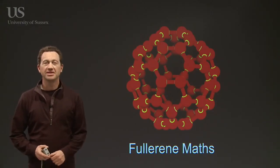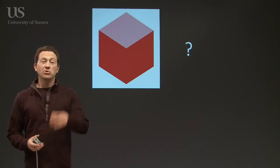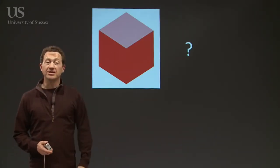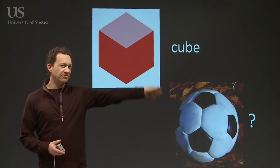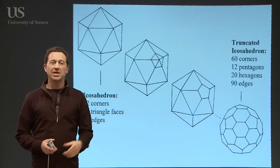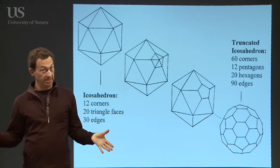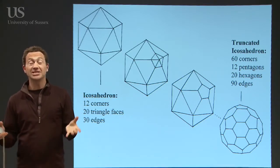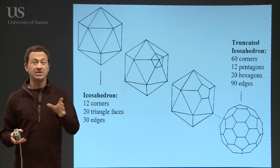Let's talk about some of the maths associated with these carbon structures. What's this? Well, this of course is a cube, everyone knows that. And what's this shape? Well, you'd say it's a sphere, or it's a football. Actually the mathematical name for the buckyball is a truncated icosahedron — of course nobody knows that — but the thing you kick around a football pitch is mathematically known as a truncated icosahedron. So let me talk you through that.